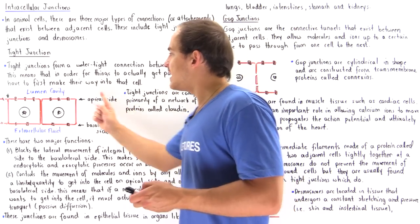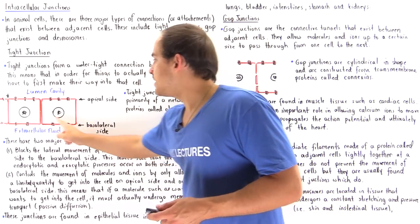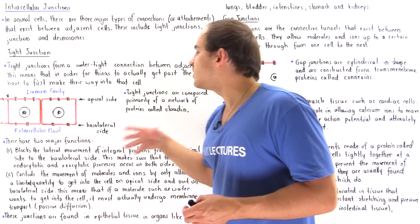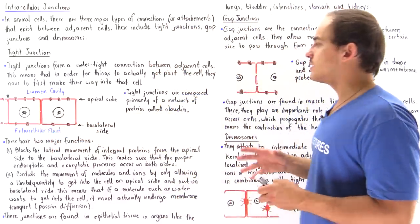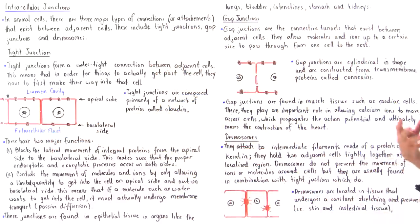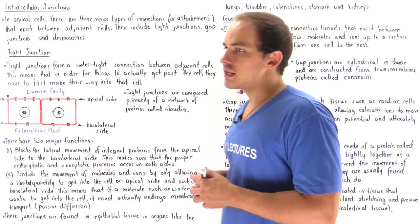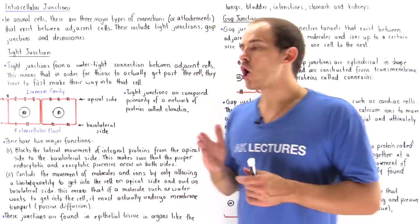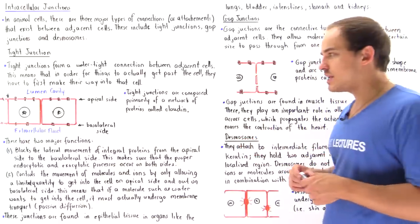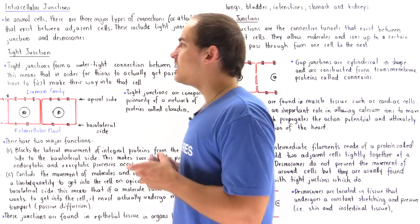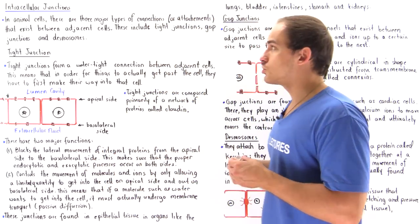The apical side is the lumen side of the cell, and the basolateral side is found on our extracellular side. Tight junctions are composed primarily of a network of proteins known as claudin. There are different types of claudin proteins.